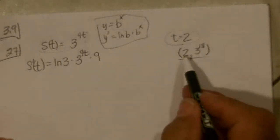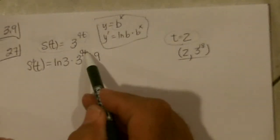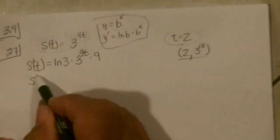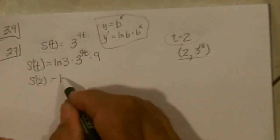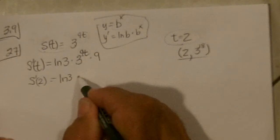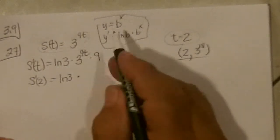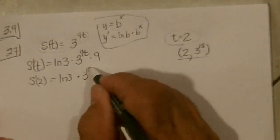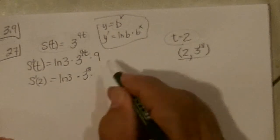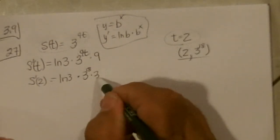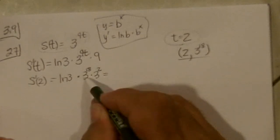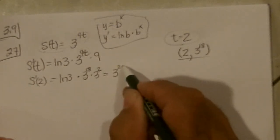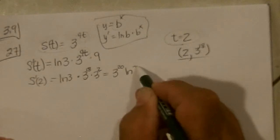And now we're supposed to put 2 in for the T to find the slope at 2. So that would be ln 3 times 3 to the 18th times, and 9 is 3 to the 2nd. So this is just 3 to the 20th ln 3.